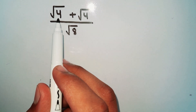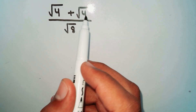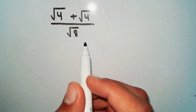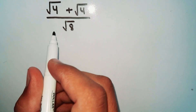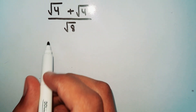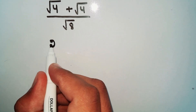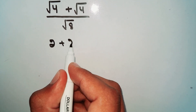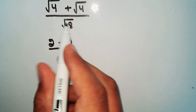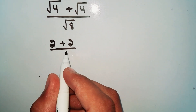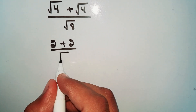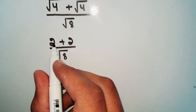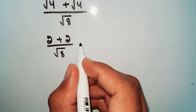Square root of 4 plus square root of 4, divided by square root of 8. Square root of 4 equals 2, so we write 2 plus 2 divided by square root of 8.